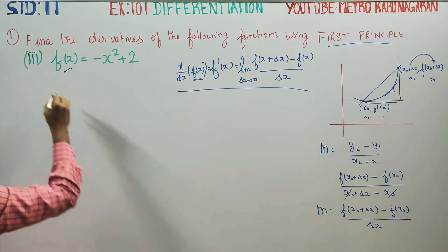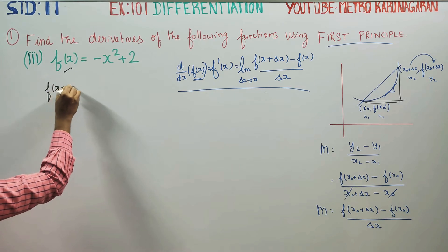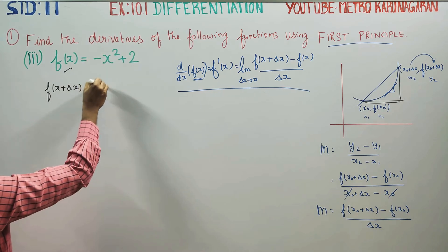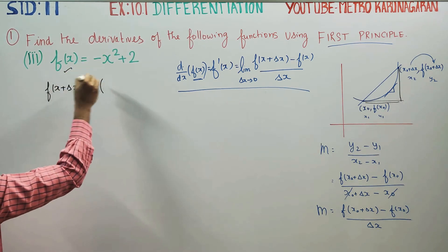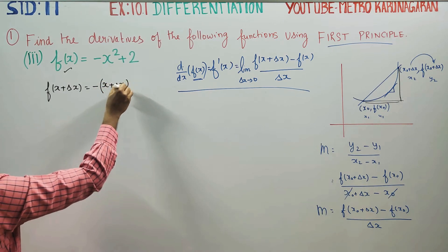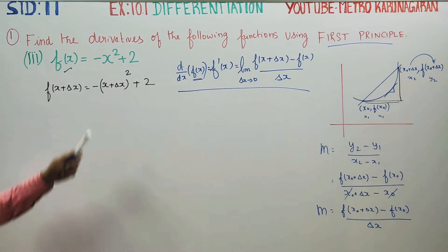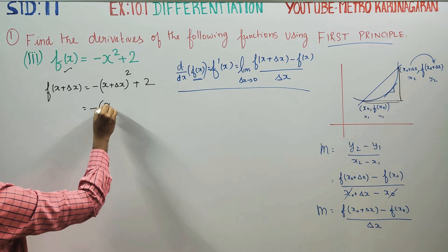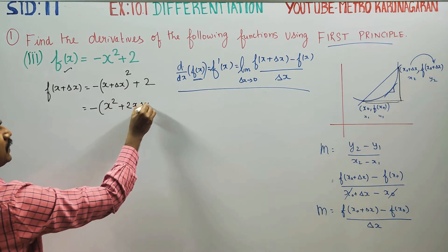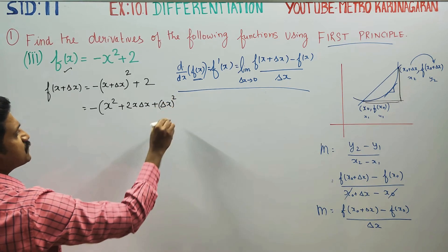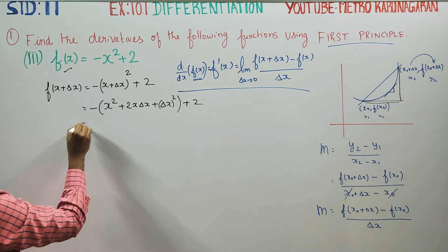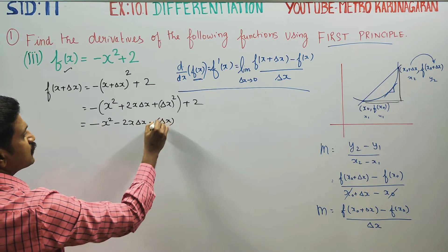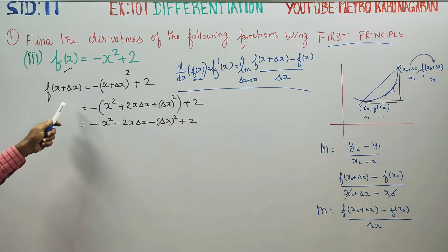So f(x) = -x² + 2. We need to write f(x + delta x): substitute (x + delta x) for x. Using the (a + b)² formula — a² + 2ab + b² — we get f(x + delta x) = -x² - 2x·delta x - delta x² + 2.